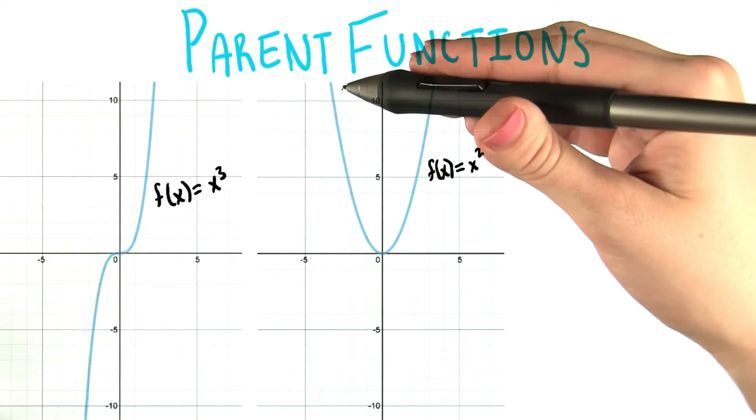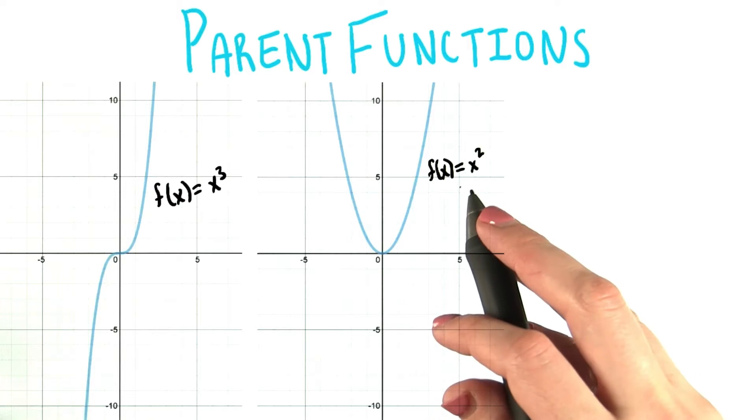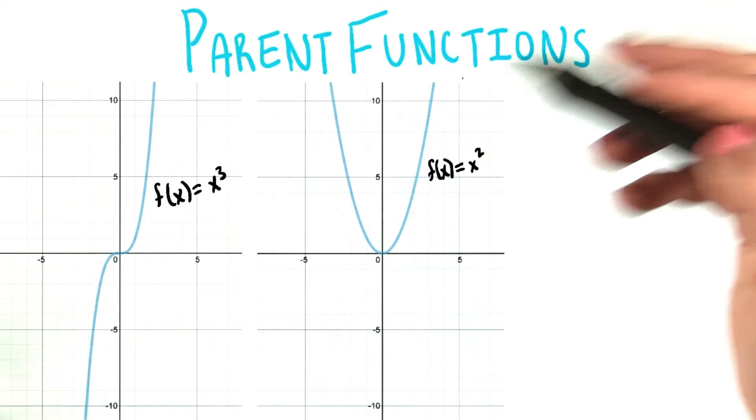So here, once again, is the parent function for a quadratic function, f of x equals x squared. Let's examine the overall behavior of this graph as well.